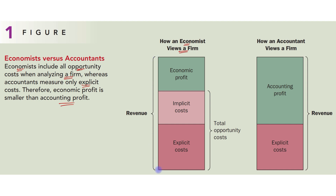This is the Total Revenue — Total Revenue minus the total opportunity cost, which includes implicit cost and explicit cost. That portion represents the economic profit. Now from the accountant's point of view, this is the Total Revenue minus only the explicit cost, giving us the Accounting Profit. So as you can see, Accounting Profit is greater than the Economic Profit.